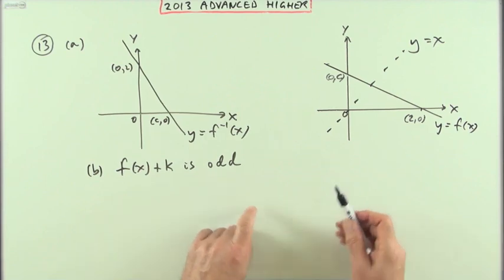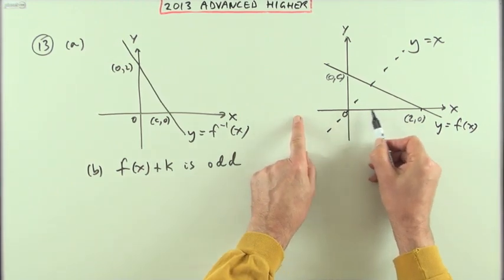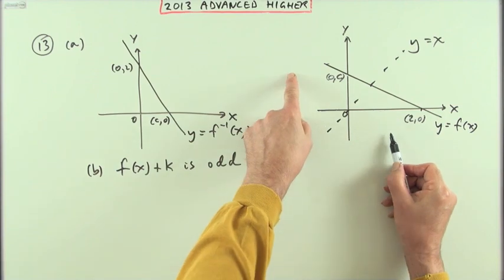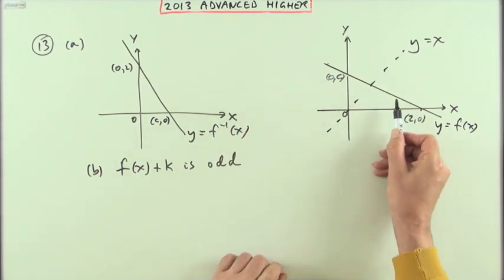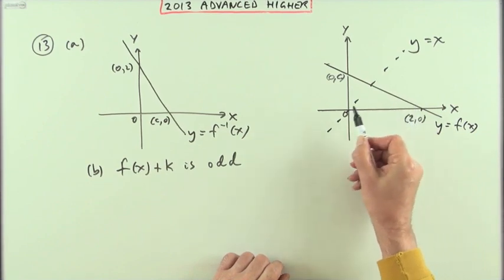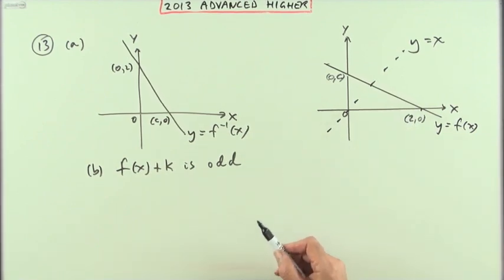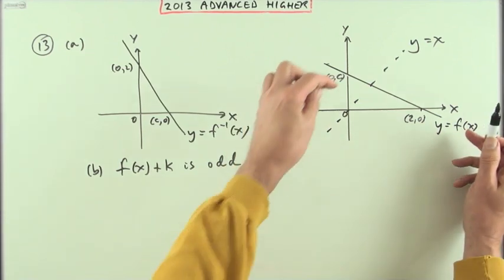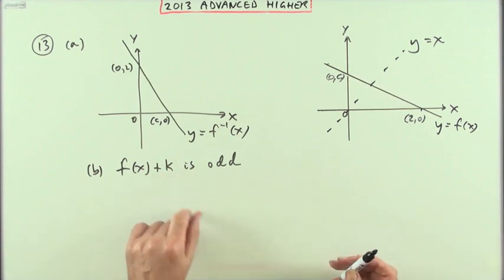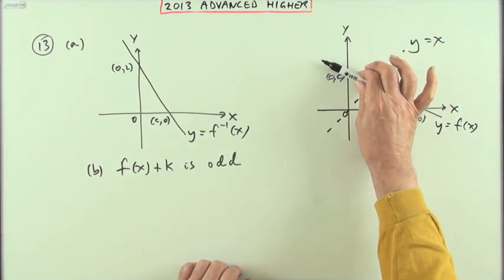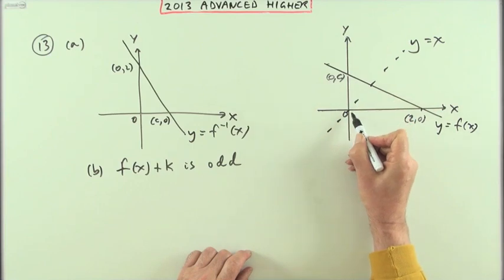To be an odd function you have to produce the same answers on either side of the origin, only one negative and one positive. When you're down you're down, when you're up you're up, and vice versa - and that's not happening here. I'd have to bring that line down to the origin. There's actually two ways I could go to the origin, but in this case, since it's specifically the vertical component, I want to drop it down.